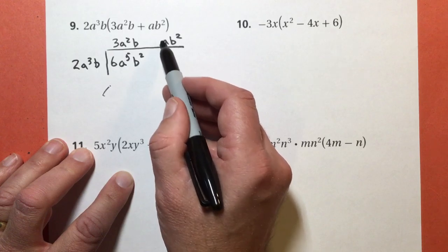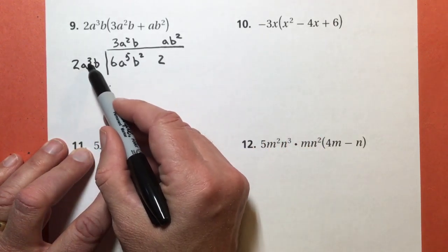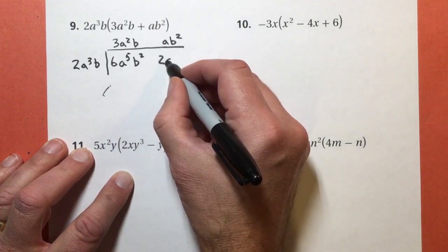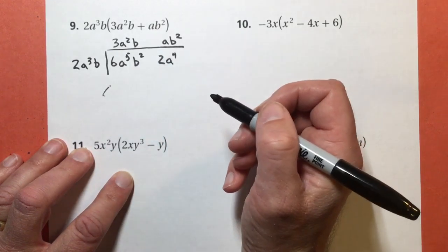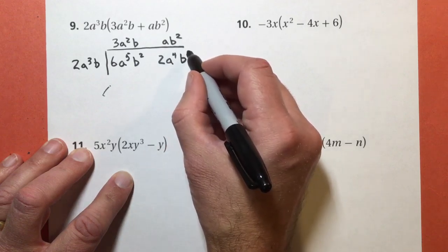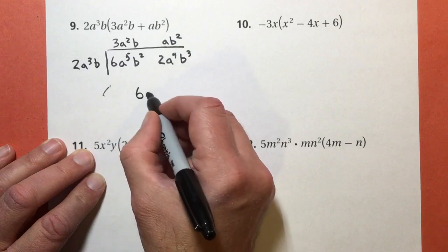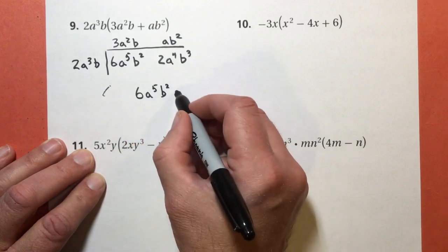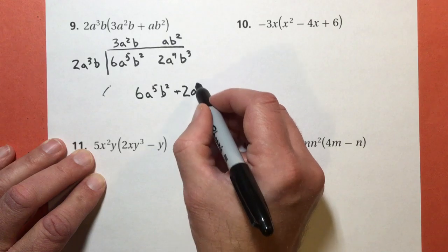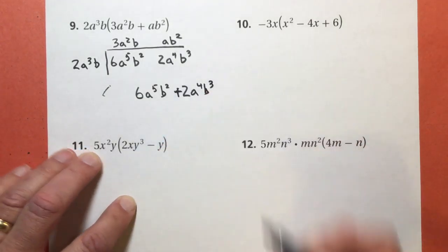2 times 1. Remember I said we need to remember that it's 1? 2 times 1 is 2. a to the third times another a is a to the fourth power. And b times b to the second power, 1 plus 2 equals 3. So I get 6a to the fifth, b to the second, plus 2a to the fourth, b to the third.